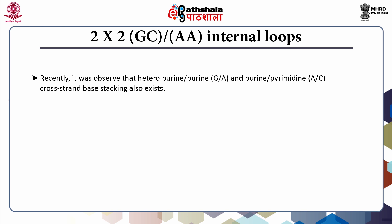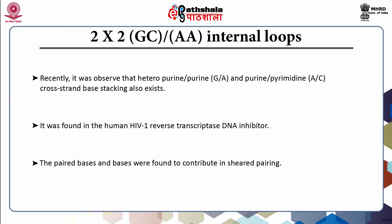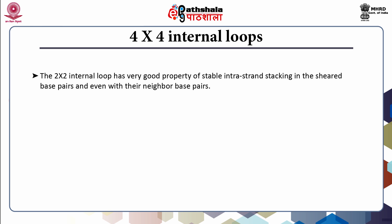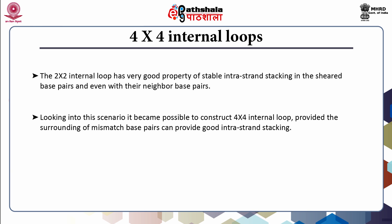It was recently observed that hetero purine GA and purine-pyrimidine AC cross-strand base stacking also exist, found in the human HIV-1 reverse transcriptase DNA inhibitor. The paired bases were found to contribute to sheared pairing. Regarding 4×4 internal loops, the 2×2 internal loops have the good property of stable intrastrand stacking in the sheared base pairs and even their neighboring base pairs. It would therefore become possible to construct 4×4 internal loops, provided the surrounding mismatch base pairs can provide good intrastrand stacking.